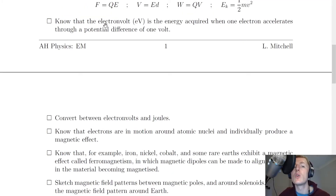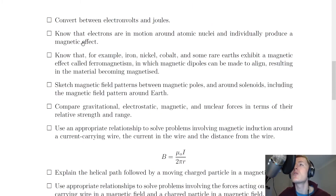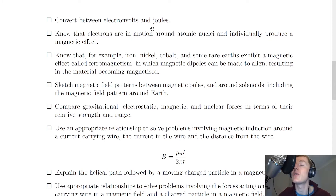You need to know that the electron volt (eV) is the energy acquired when one electron accelerates through a potential difference of one volt. You also need to convert between electron volts and joules — if given a value in electron volts you convert it to joules, and vice versa. That covers all the electric field material; now we're moving on to magnetic fields.